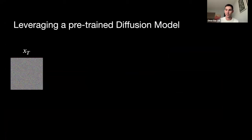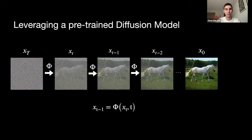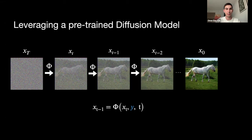We work with a pre-trained text-to-image diffusion model. In terms of notation: we start sampling from pure Gaussian noise, denoted x_T, then apply a sequence of denoising steps until we reach the clean image. We treat the diffusion model as a flow, denoted by phi, so the denoising step looks like x_{t-1} = phi(x_t, t). Since we work with text-to-image models, there is also a conditioning signal y, which is the text prompt.